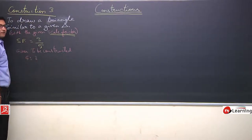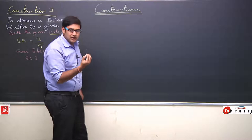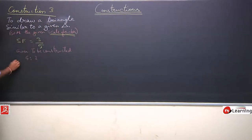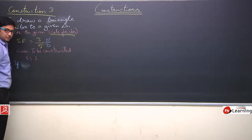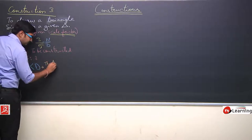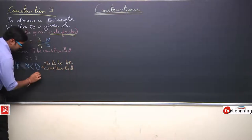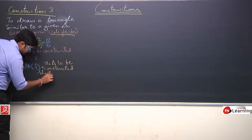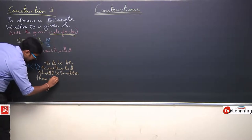Scale factor 3 by 5 means the triangle we have to construct is smaller than the given triangle. If the numerator is less than the denominator, then the triangle to be constructed should be smaller than the given triangle.